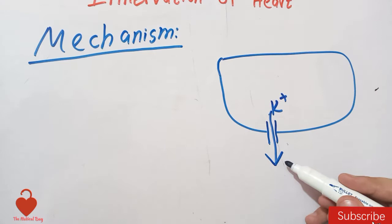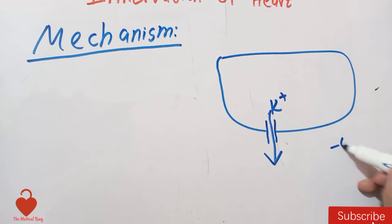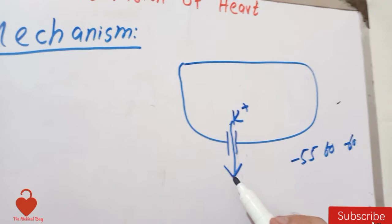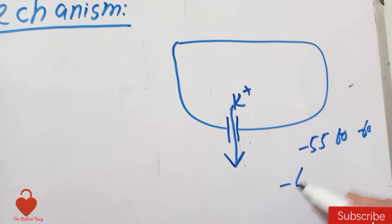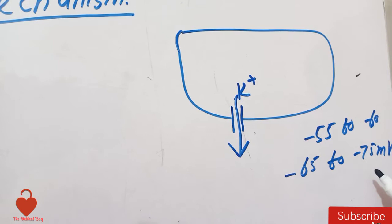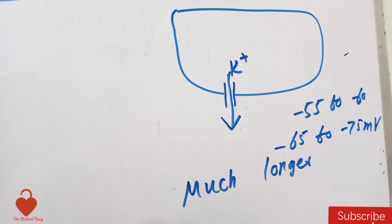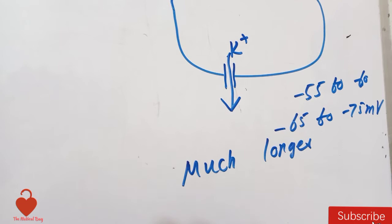As potassium ions are positively charged, their outward leak causes the resting membrane potential inside the cell to become more negative. Normally the SA node resting membrane potential is minus 55 to minus 60 mV, but under parasympathetic action it decreases to minus 65 to minus 75 mV. When this resting membrane potential is more negative, a much longer time is required for sodium and calcium ions to cause depolarization, and in this way the SA node rhythm is reduced.